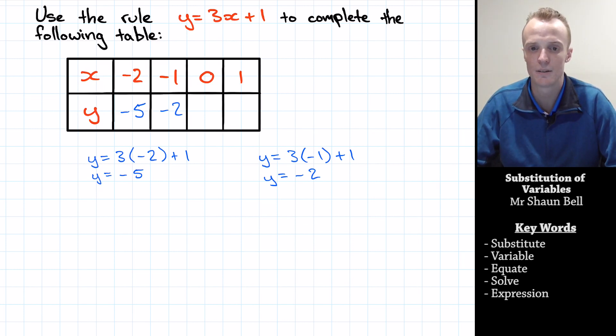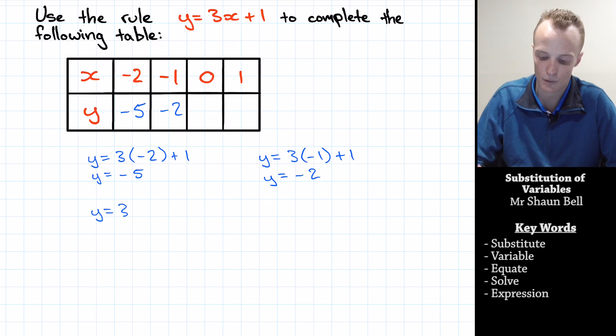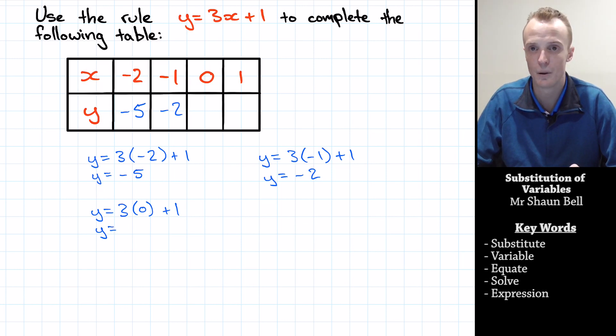What about when x is 0? Well, it's going to be y equals 3 times x. We substitute it with 0 plus our 1. Therefore, y is going to equal 3 times 0 which is 0 plus 1 which is 1. So 1 goes here.